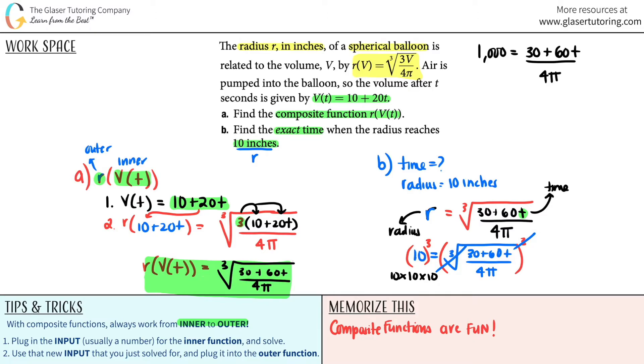Now they say exact time. So that means that we have to actually use the π. We have to actually plug in what π equals into the calculator and solve. They don't want us to have a t number that has a π in it.